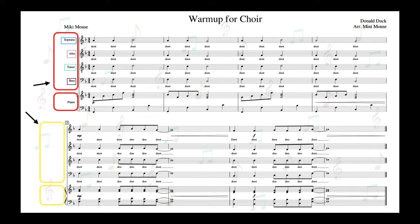Although soprano, alto, tenor, and bass are the most common vocal parts, there are many other options. For example, the score could be written only for alto and soprano, or part 1 and part 2, or tenor and bass. The most important thing is that you always know what part you are singing and can follow it in your score.